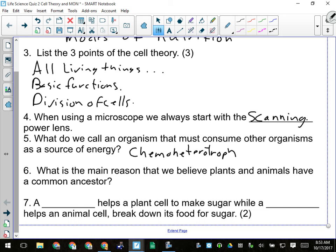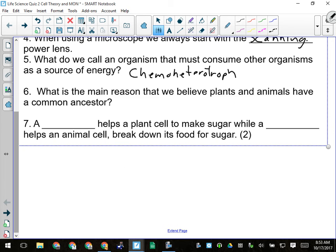Listening, please. What's the main reason we believe plants and animals have a shared ancestor? I'll accept anything that talks about similar structures and/or processes. Those are the reasons: they have many similar structures and processes, the way they transport things, the way they metabolize things, stuff like that is similar.